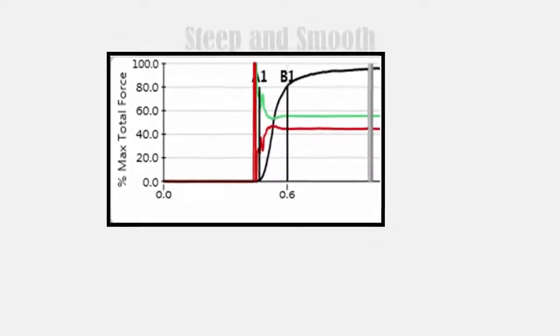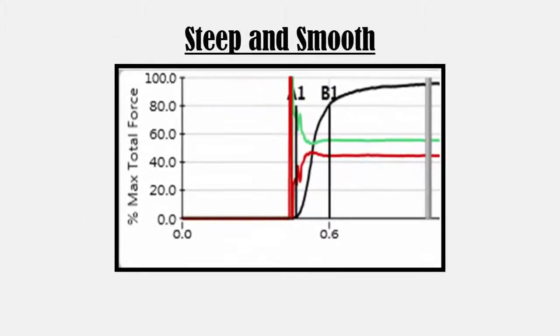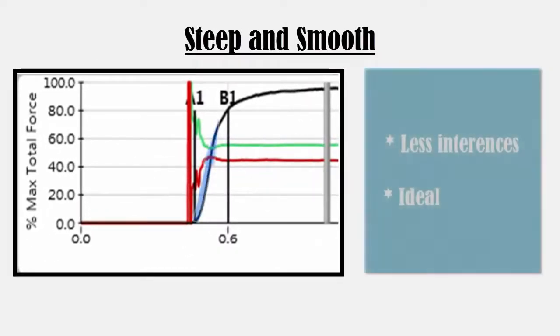The first example shows the black force line steep and smooth. This indicates that your patient can readily close their teeth together without much resistance.